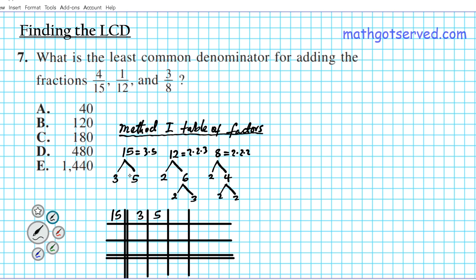The next denominator is 12. Decomposed, 12 is two times two times three. So we have a three there, and we can put the three here since it matches. Then we put a two here and another two in the next column, since this is the five column. And then for eight, the decomposition is two times two times two. So we put a two, times a two, and we need one more two. Since the first two columns are already taken by three and five, we just place the remaining two right here.